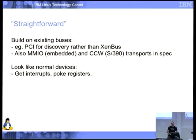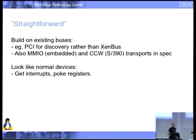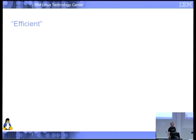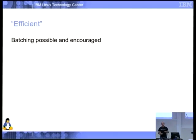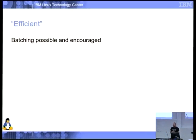Straightforward also means these things should look like normal devices — you poke the registers, they interrupt you when stuff happens. Efficient means batching is possible and encouraged. You shouldn't have to poke registers to do stuff; it should be able to batch up operations where possible.